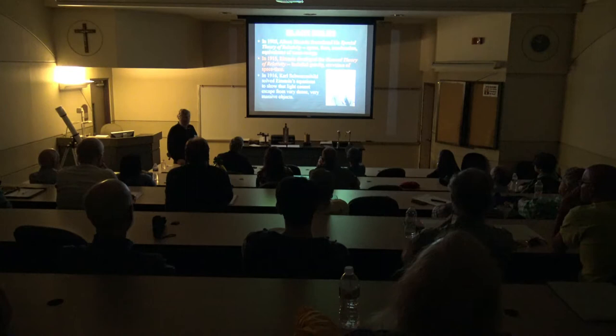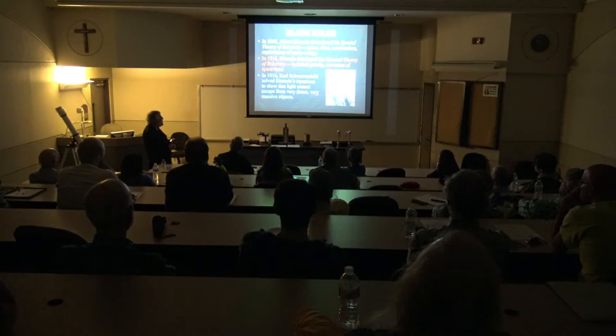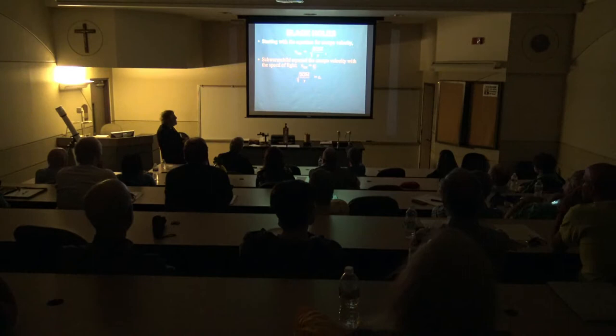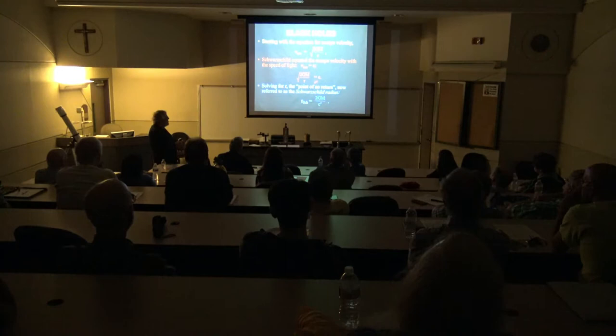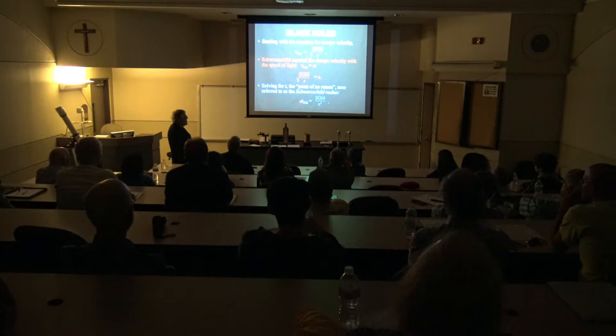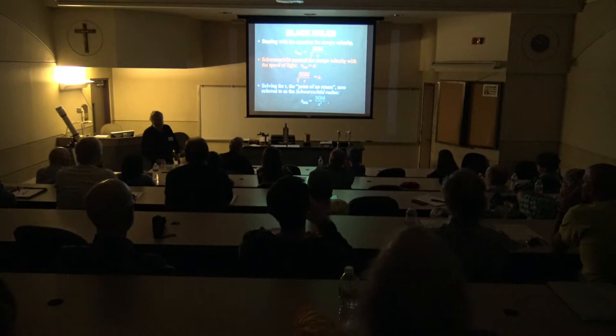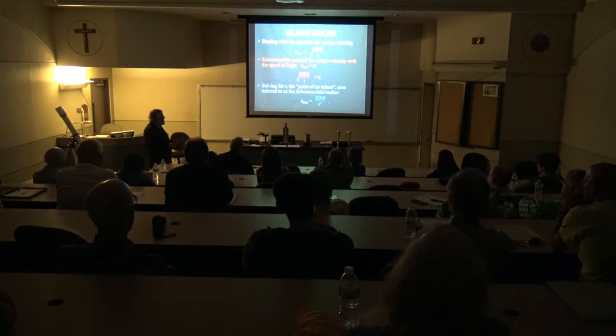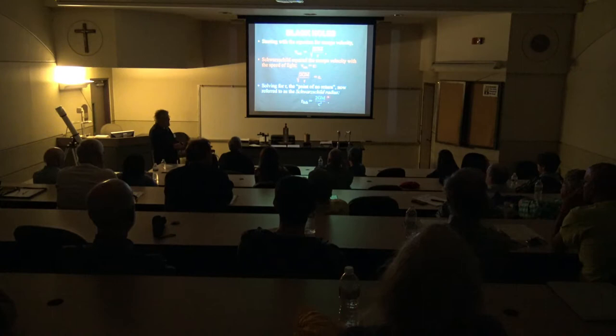In 1916, Karl Schwarzschild solved Einstein's equations to show that light can't escape from very dense, very massive objects. He started with the escape velocity equation, set the escape velocity equal to the speed of light, squared both sides, cross-multiplied, and solved for the Schwarzschild radius — inside of which nothing can escape. The only variable on the right side of the equation is mass, so the Schwarzschild radius of a black hole depends only on its mass.